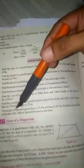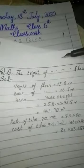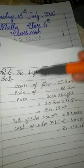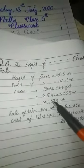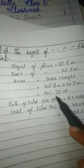Question number 8: The height of a parallelogram-shaped floor is 25.8 meters and base is 36.5 meters. Find the cost of tiles at the rate of 4.50 rupees per meter square. Height is equal to 25.8 meters, base is equal to 36.5 meters. Area of parallelogram equals base multiplied by height, giving 25.8 multiplied by 36.5 meters, which equals 941.70 meters square.